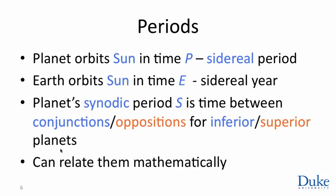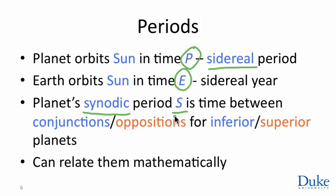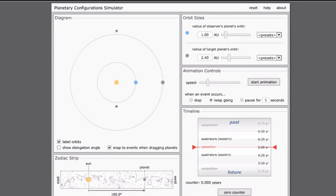We can do a nice calculation to get a handle on this racetrack story. Imagine all planets orbiting the Sun. Let P be the sidereal period — the time it takes a planet to complete one circuit around the Sun relative to the stars. Earth itself has its own period E, which is exactly the sidereal year. We also define a synodic period S, the time between consecutive occurrences of some particular alignment between the Earth, the planet in question, and the Sun — just as with lunar phases. We want to relate these mathematically.